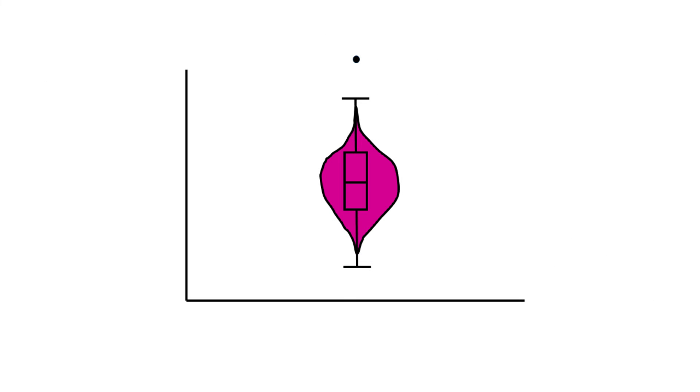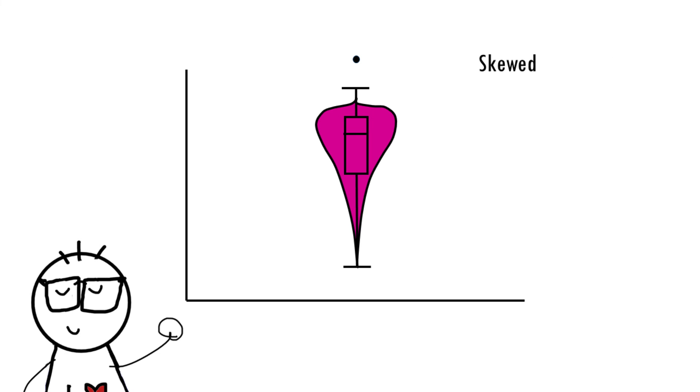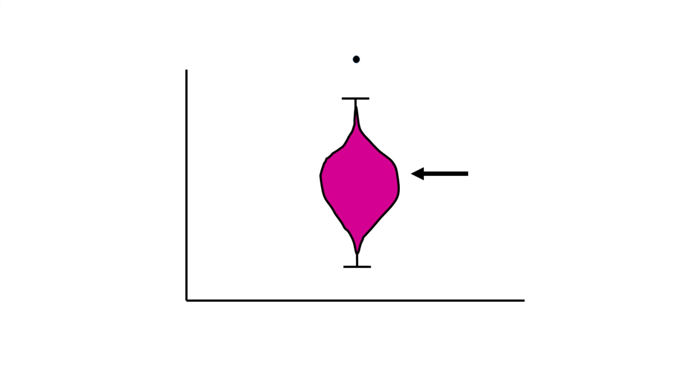With a violin plot, not only can we easily visualize stats like the median and the IQR, but we also get the advantage of seeing the probability density of the data. So we can quickly see if our data is normally distributed or if it has skew or multimodality. Wider sections of the violin plot indicate a higher density of data points, while narrower sections indicate lower density.